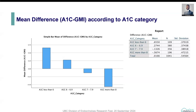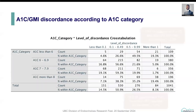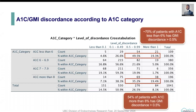That is clinically significant and might affect clinical decision-making. Breaking down the discordance further by A1C category and level of discordance: 70 percent of patients with A1C less than 6 have clinically significant discordance, and 54 percent of patients with A1C greater than or equal to 8 percent have clinically significant discordance, i.e., greater than or equal to 0.5 percent.